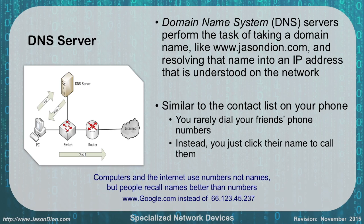DNS servers are domain name servers. They have the job of translating names to numbers and numbers to names. If you go to something like jasondion.com, that's a whole lot easier to remember than going to 66.123.45.237. The computer doesn't really understand the name, but the DNS server understands to switch that to an IP address and then route the traffic there. This is similar to a contact list on your phone — I don't know my kid's phone number, but I can click on her face and she'll pick up. DNS allows us to do names to numbers and numbers to names. We don't have to memorize the numbers, we just need to remember the name.